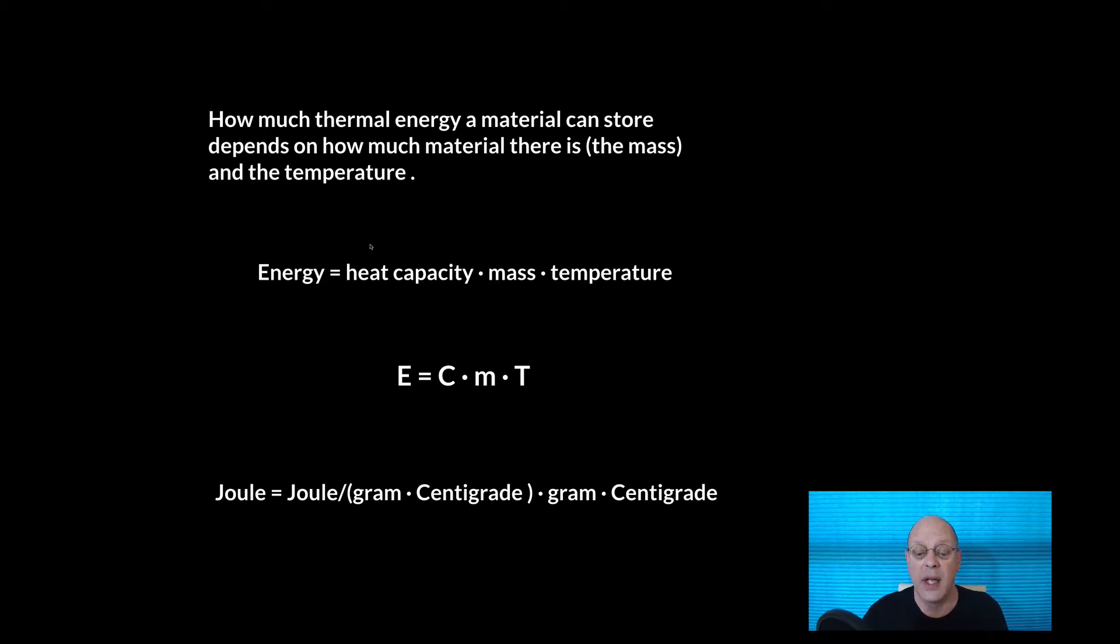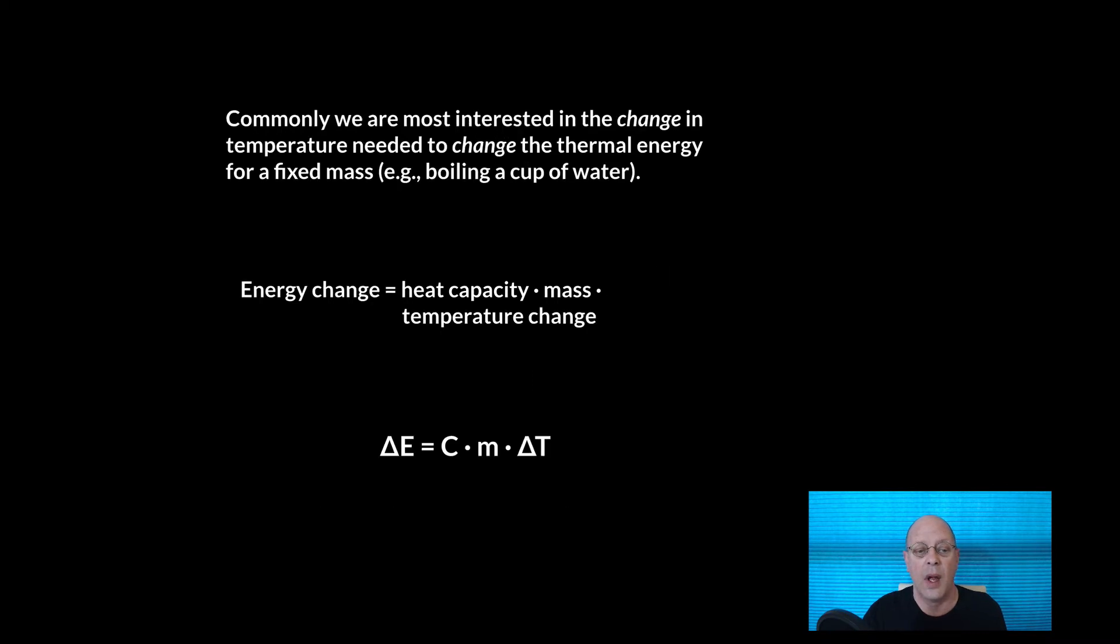So a heat capacity has a unit of a joule, an energy per gram per centigrade, an energy per mass per unit temperature. Now commonly, what we are most interested in is the change in temperature needed to change the thermal energy for a fixed mass. So for example, I want to boil a cup of water.